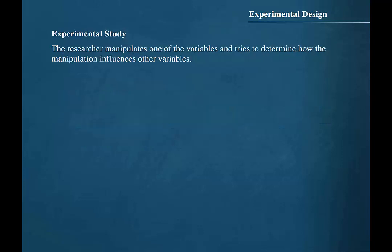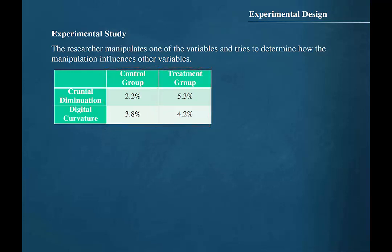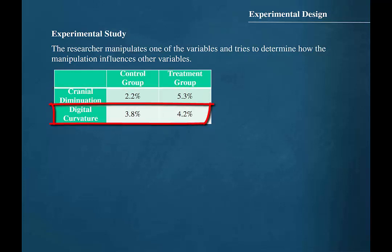In an experimental study, the researcher manipulates one of the variables and tries to determine how the manipulation influences other variables. For instance, when a pharmaceutical company tests the side effects for experimental medications, they will administer a placebo to a control group and the actual medical therapy to the treatment group. They would then compare to see if a statistical significance exists between the incidence of a side effect between the two groups.